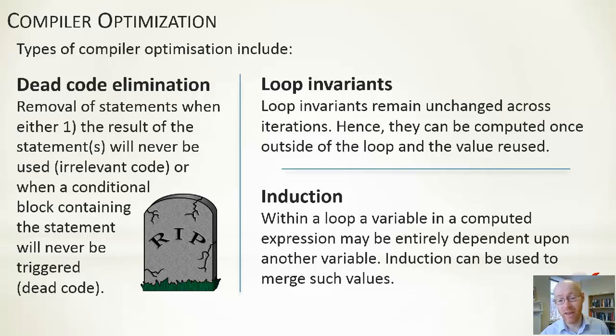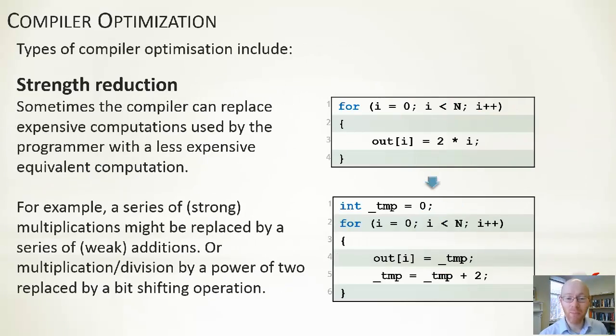Induction is another thing there. A loop variable as a computed expression may be entirely dependent upon another variable. You can use a mathematical process, induction, to infer, to calculate that, to merge these things together so you have a more simple form of the expression. Strength reduction is an interesting one. If we have a look at the fragment of code at the top, we've got a for i=0 going up to n, exactly the same in the loop structure in the bottom.